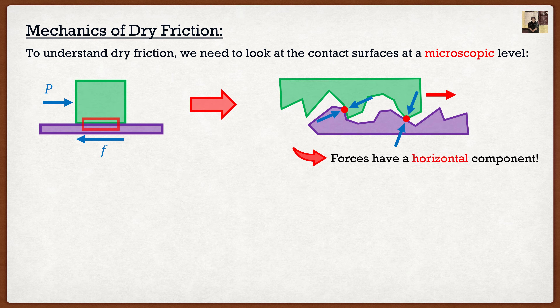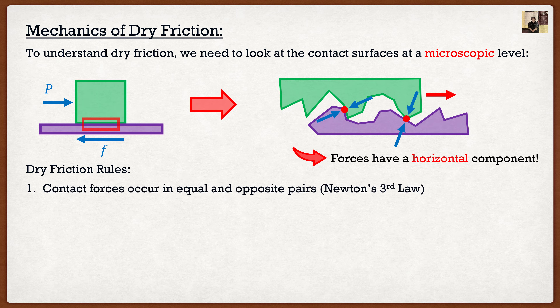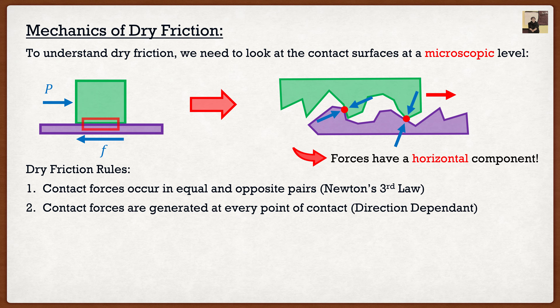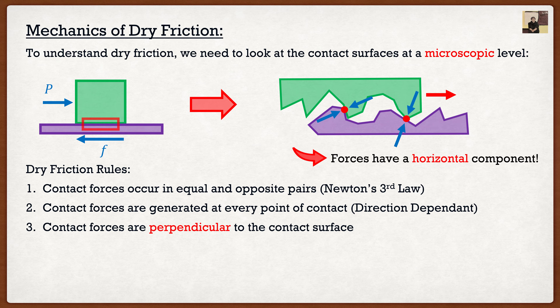This is just to show you guys where friction comes from. Now, dry friction has a couple of rules, and they're fairly intuitive. The first one is that contact forces occur in equal and opposite pairs — basically Newton's third law. The second one is that contact forces are generated at every point of contact. And the third one is that contact forces are perpendicular to the contact surface — so if your hand is on a horizontal desk, the normal force goes directly upwards, perpendicular to that surface.